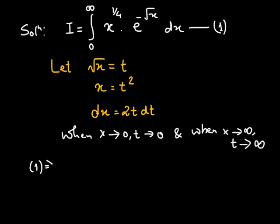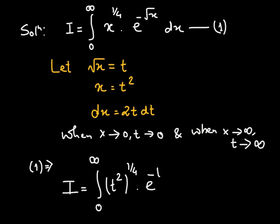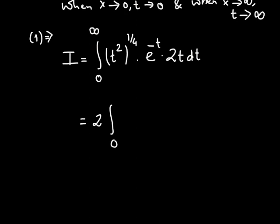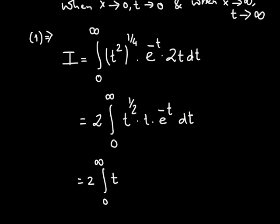Hence, equation 1 now becomes: i is equal to the integral from 0 to infinity of t squared whole raised to the power of 1/4 times e raised to the power of negative t, times dx which becomes 2t dt. This simplifies to 2 times the integral from 0 to infinity of t raised to the power of 1/2 times t times e raised to the power of negative t dt, which gives us 2 times the integral from 0 to infinity of t raised to the power of 3/2 times e raised to the power of negative t dt.